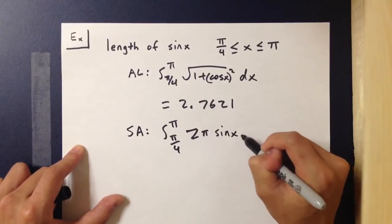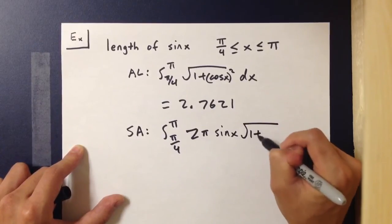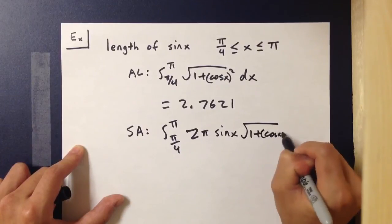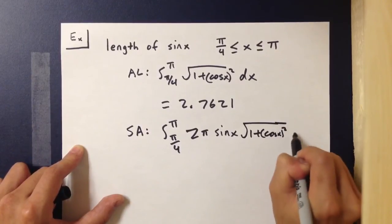And then multiplied by the length, which is the square root of 1 plus cos²(x) dx.